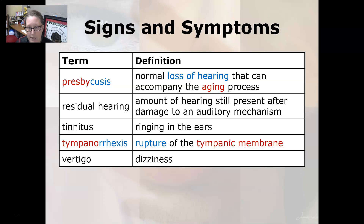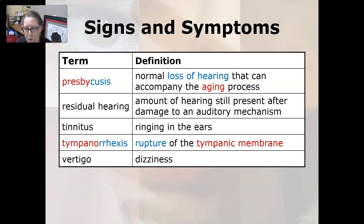Presbycusis is an abnormal loss of hearing that can accompany the aging process. Residual hearing is the amount of hearing still present after damage to an auditory mechanism. Tinnitus is ringing in the ears, and tympanorrhexis is the rupture of the tympanic membrane. Vertigo is dizziness.